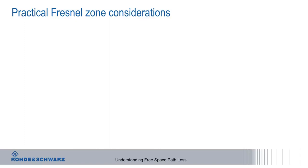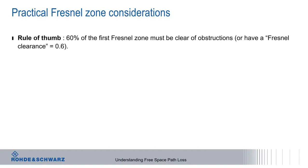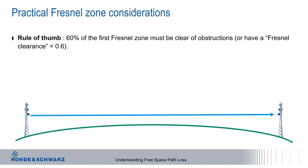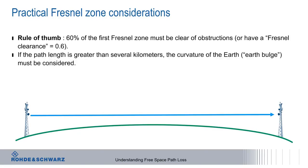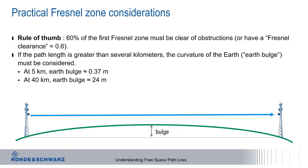How do we use the first Fresnel zone in practical applications? First, a general rule of thumb is that 60% of the first Fresnel zone should be clear of obstructions, or there should be a 0.6 Fresnel clearance. Secondly, for terrestrial links longer than several kilometers, the curvature of the Earth, also called Earth bulge, becomes a consideration. For example, over a distance of 5 kilometers, Earth bulge is only 0.37 meters, whereas over a 40 kilometer link, Earth bulge is 24 meters, which could enter the first Fresnel zone depending on link frequency.